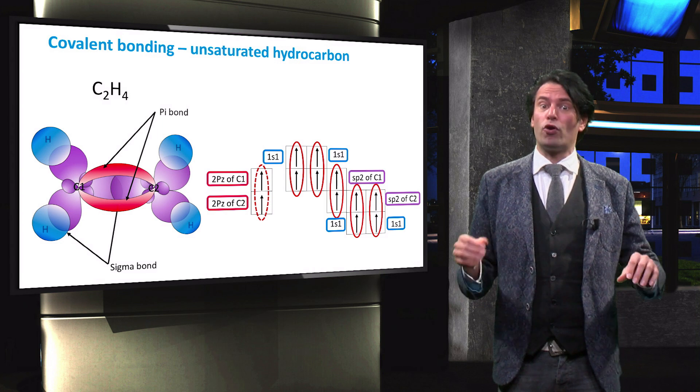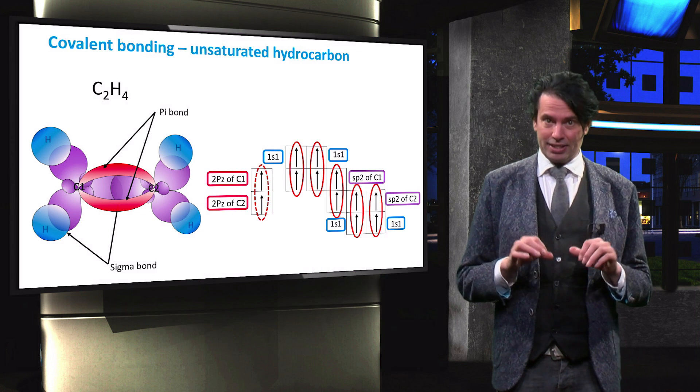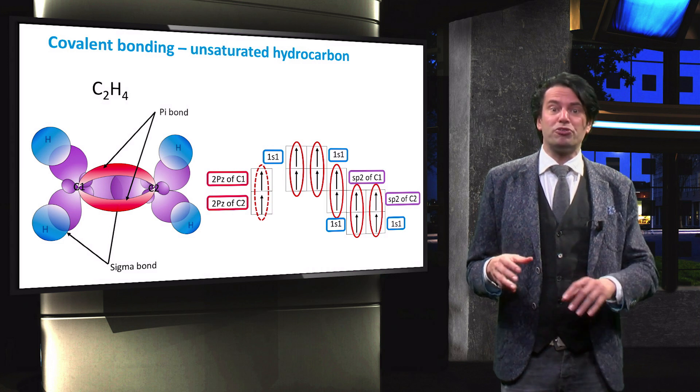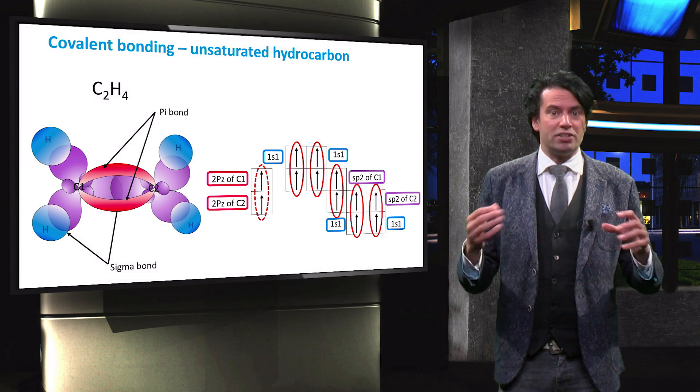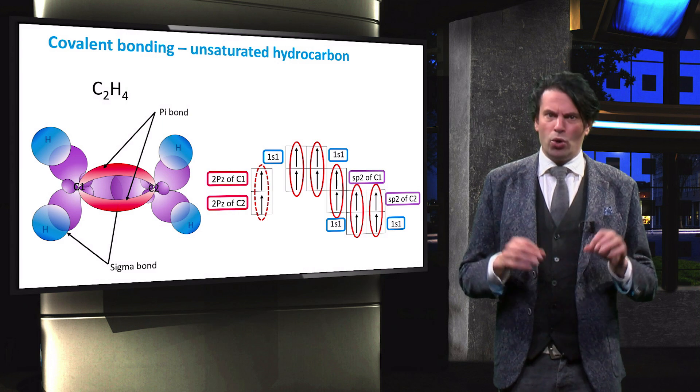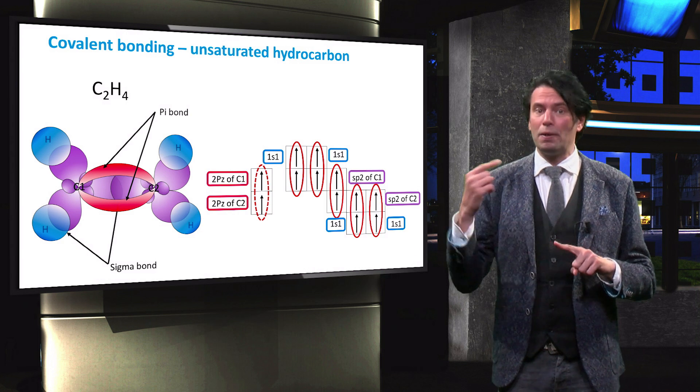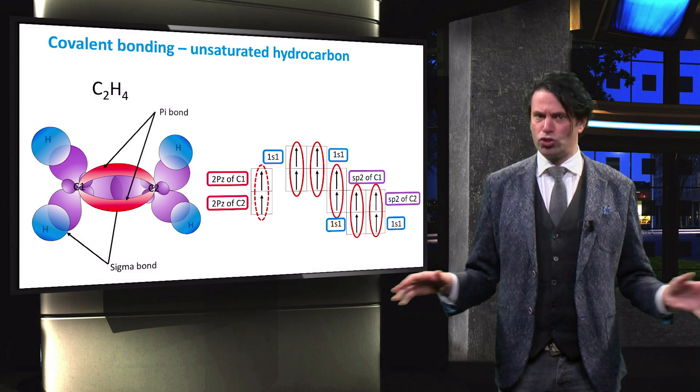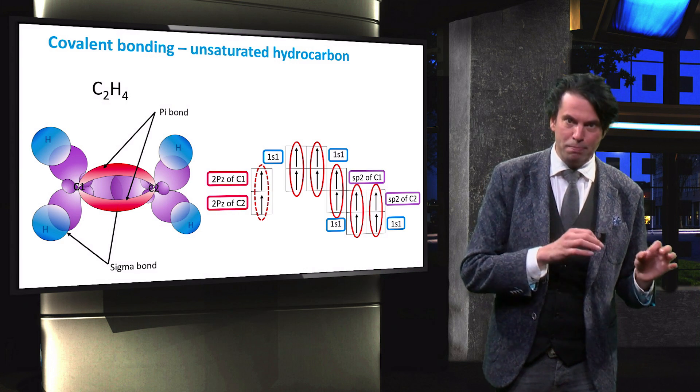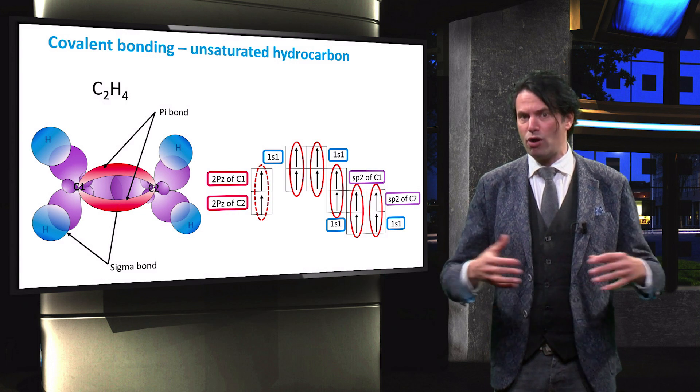OPV therefore only works with unsaturated hydrocarbons. Complex organic molecules may contain several carbon atoms with an alternating single and double or triple bonded carbon atom, with every atom having at least one p orbital empty.